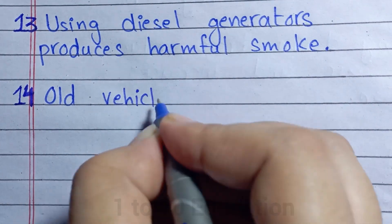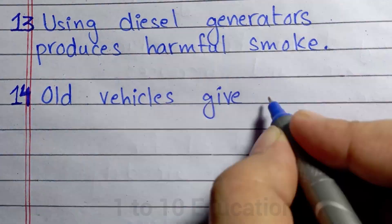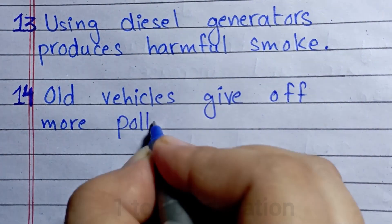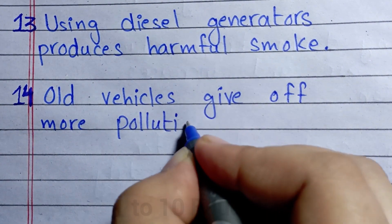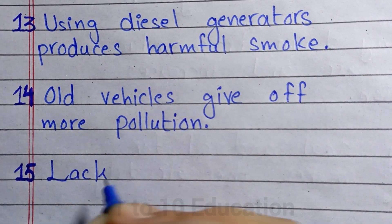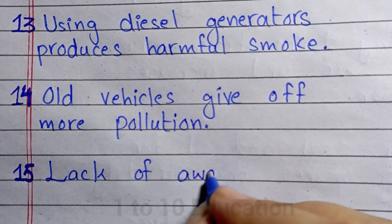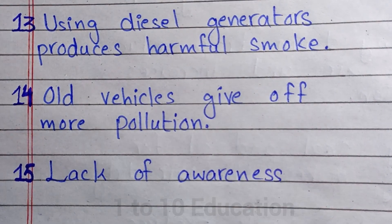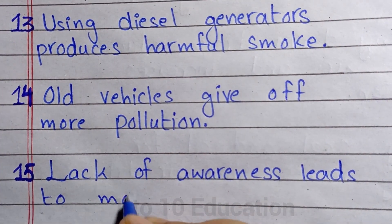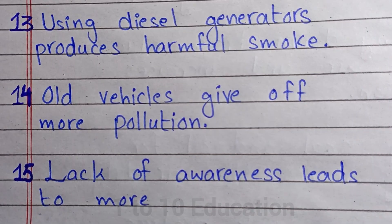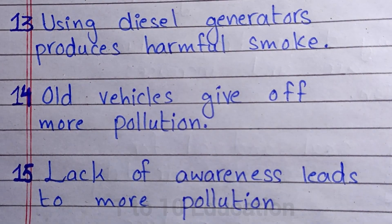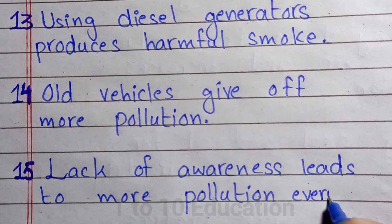Number 14: Using diesel generators produces harmful smoke; all vehicles give off more pollution. Number 15: Lack of awareness leads to more pollution every day.